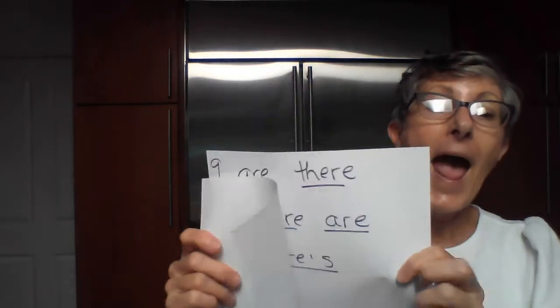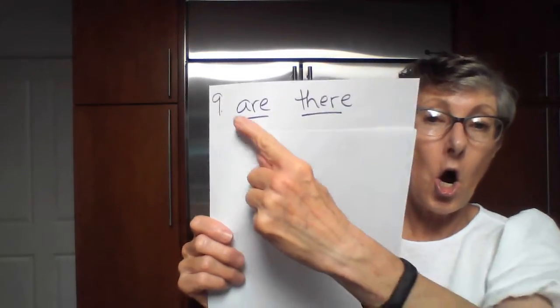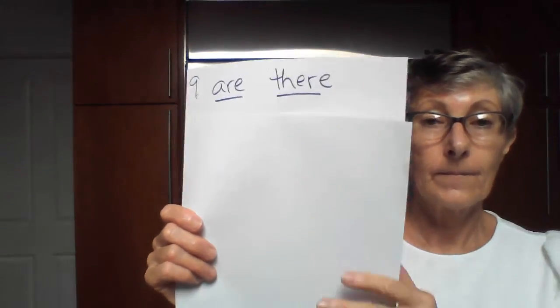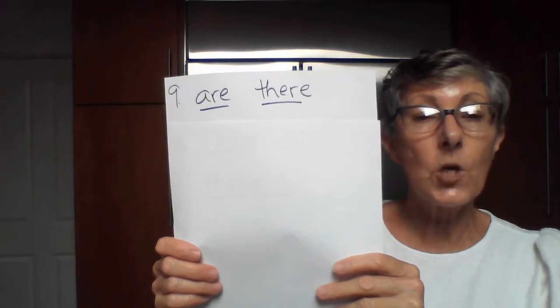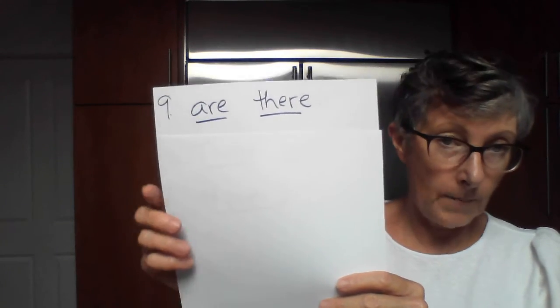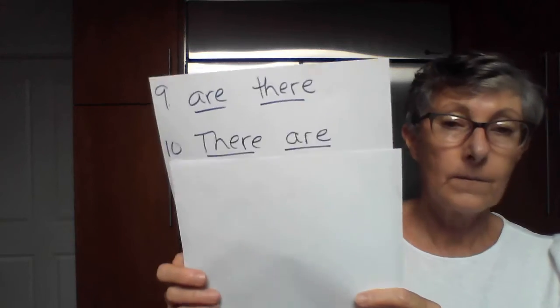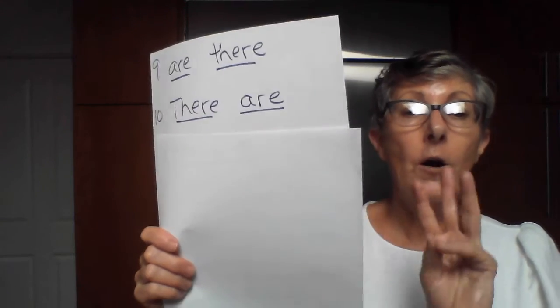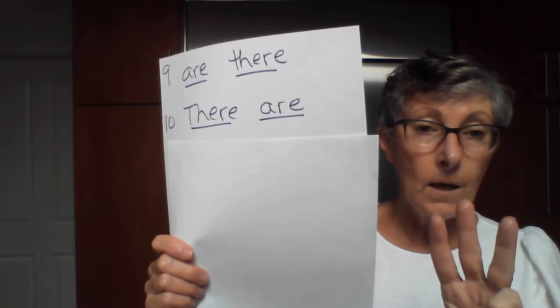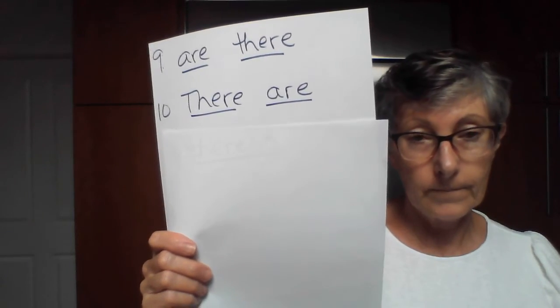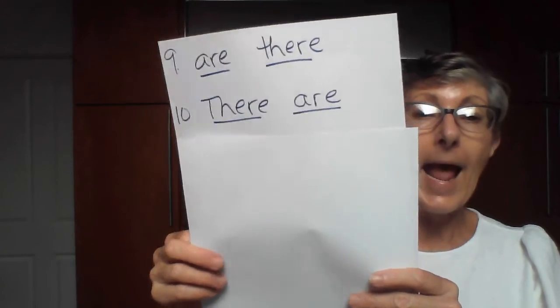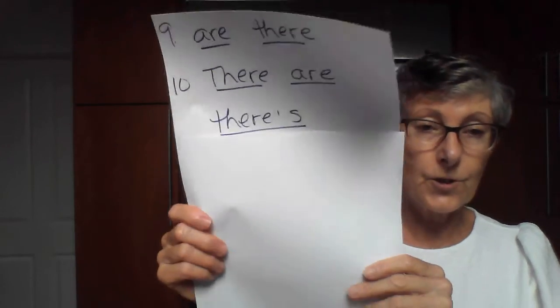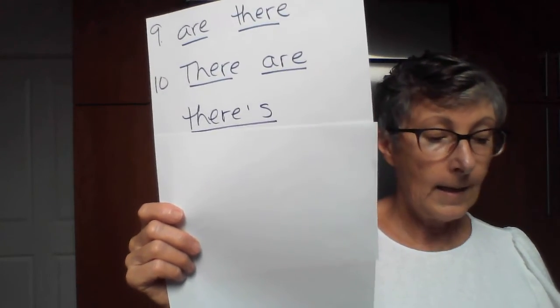So number nine: 'How many windows are there in the apartment?' And the answer is: there are three windows in the living room and there's one window in the bedroom. That was a lot of work — thank you very much!